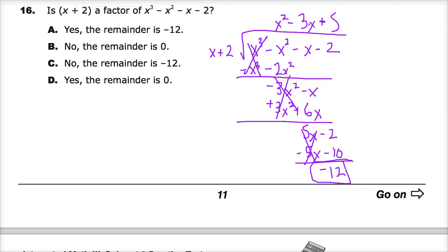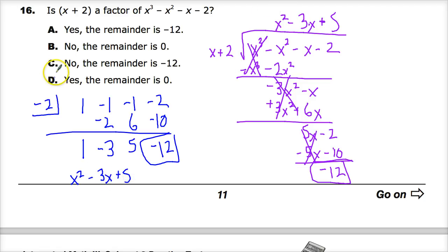And just to go back and make the quick compare between the synthetic, in case you need to see that again. Because who wouldn't want to see that again? How exciting. There's my remainder. There's my x squared minus 3x plus 5. Just like up here. So the answer to this is C. There is not a factor. Because there is a remainder.